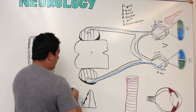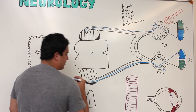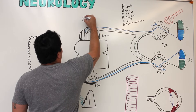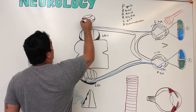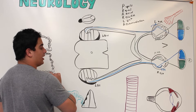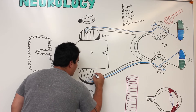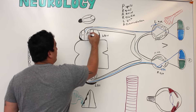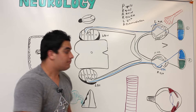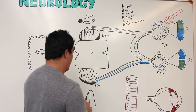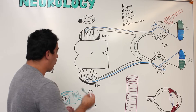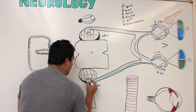These fibers synapse onto the lateral geniculate nucleus (LGN) on the thalamus. The LGN has six layers: ipsilateral fibers go to layers 2, 3, and 5; contralateral fibers go to layers 1, 4, and 6. This applies to both the left and right LGN.